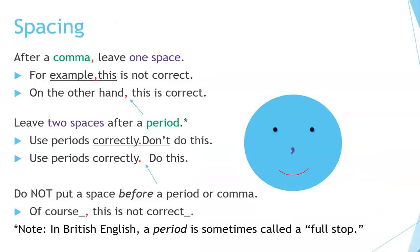Spacing: after a comma, leave one space. For example, writing without that space is not correct. On the other hand, comma then space — that is correct. Leave two spaces after a period.